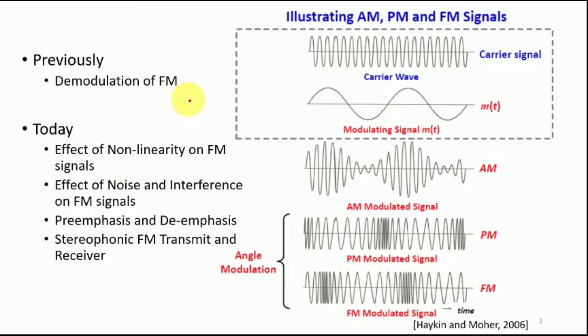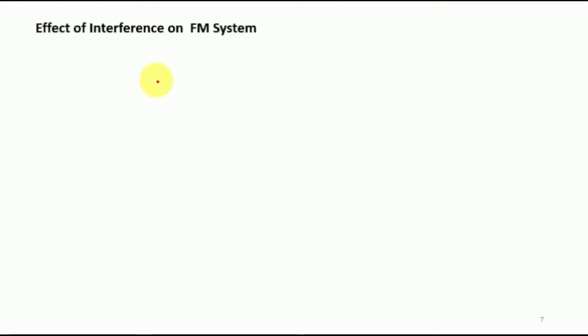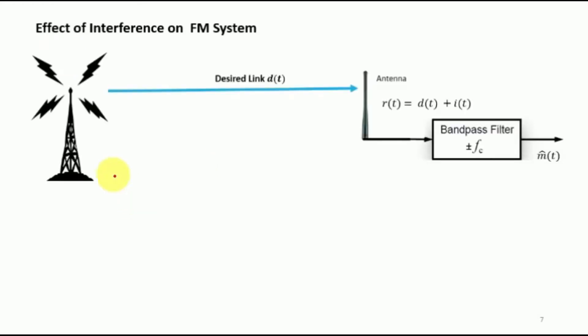In today's session we are going to touch upon the effect of noise and interference on FM signals. Let us consider the effect of interference on FM systems. We have a radio broadcast station which is projecting a direct link — transmitting a signal d(t) on towards the antenna.